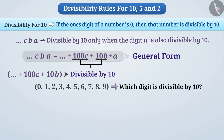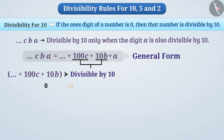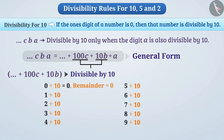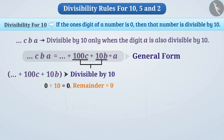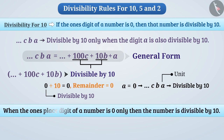Thus we can say that this number will be divisible by 10 only when the digit A is also divisible by 10. Among all digits, 0 is the only digit which when divided by 10 gives remainder 0. The rest of the digits do not give remainder 0. So this number is divisible by 10 only when A is 0 — that is, when the ones place digit of a number is 0, only then the number is divisible by 10.